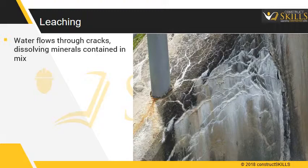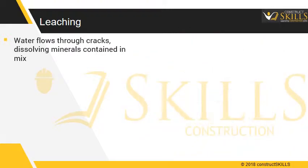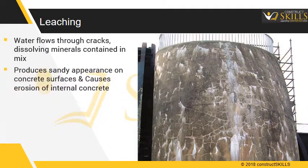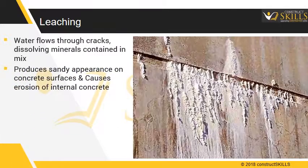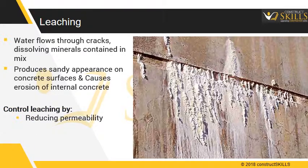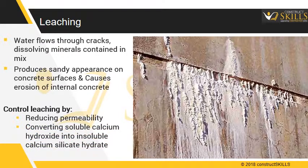Leaching occurs when water flows through cracks, dissolving the minerals — Ca(OH)₂ — contained in the concrete mix. It produces a sandy appearance on concrete surfaces and causes erosion of internal concrete. It can be controlled by reducing permeability and converting the soluble calcium hydroxide into insoluble calcium silicate hydrate, CSH.